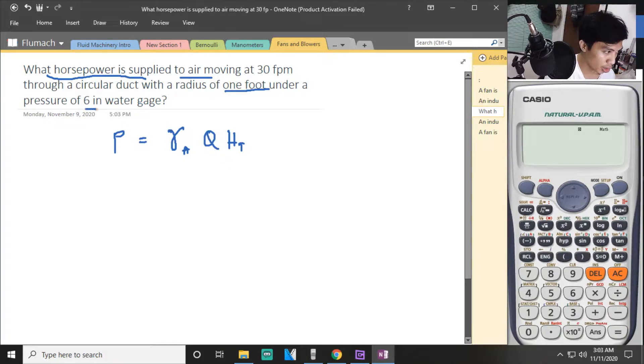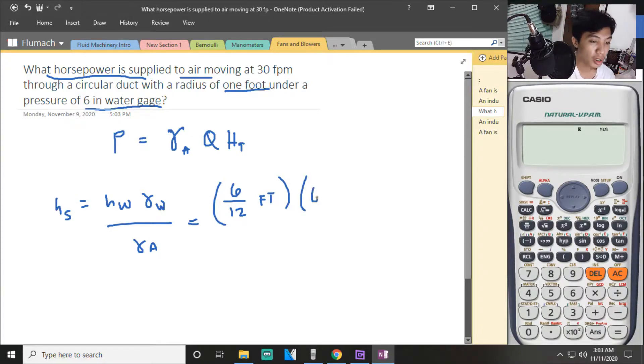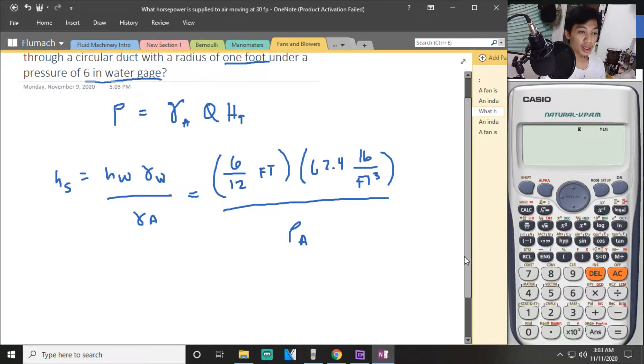So 6 inch water gauge. We need to convert the water gauge using density of water times head. Since it is in these units, we can say the given here is the same. Head of water is 6, always divide by 12 to convert to feet. We need the static head, and for water, 62.4 pounds per cubic foot. You divide this here.